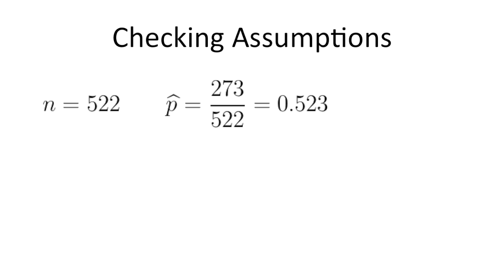In our scenario, we were given that n equals 522, and we computed p hat to be 0.523. Since we don't have the population proportion, we're going to use the sample proportion as an estimate.